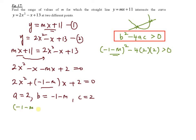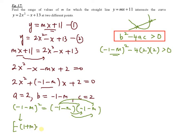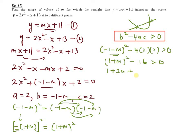For the expansion, notice that negative 1 minus m squared is the same as 1 plus m squared, because factoring out the negative gives negative 1 times 1 plus m, and squaring negative 1 gives positive 1. So you have 1 plus m squared minus 16 greater than 0, which expands to 1 plus 2m plus m squared minus 16 greater than 0, giving m squared plus 2m minus 15 greater than 0.